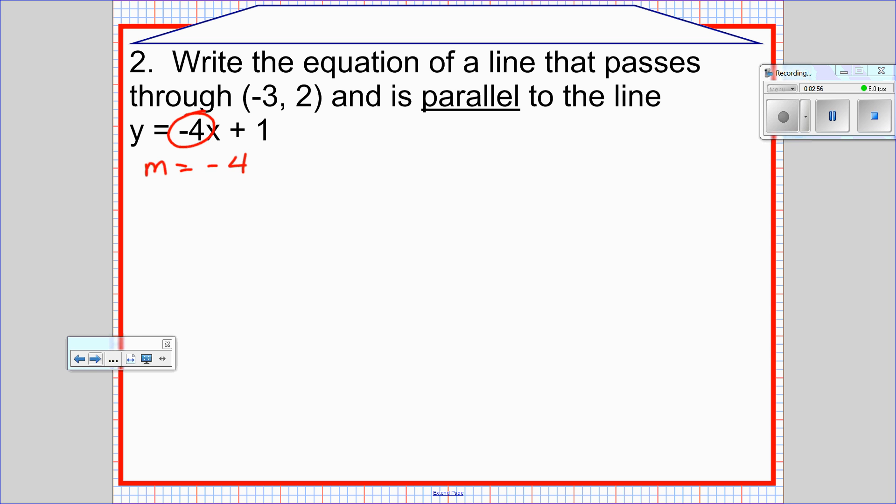It looks like here the other information I have is this point, negative 3, 2. So I'm just going to write an equation in point-slope form. And that is a line that is parallel to the given line and also would pass through negative 3, 2.